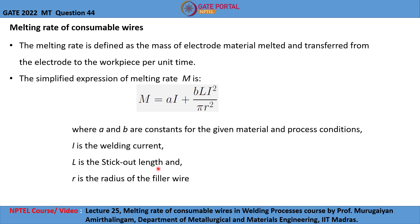Let me explain what stick out length means. When the consumable wire is coming out of the contact tip and the arc is being formed between the base plate and the wire, the stick out length L is the length of the consumable wire or electrode that is out of the contact tip. This length L is the stick out length, and this part of the consumable wire is the current-carrying part of the electrode, and it will have an influence on the melting rate as shown in the formula.